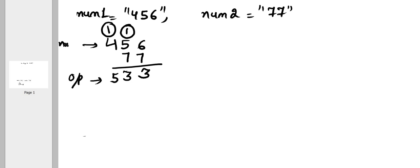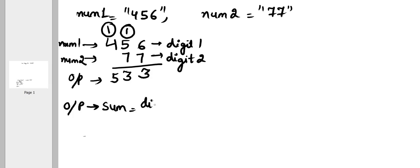So this is your num1 and this is your num2. So let's say this is your digit 1 and this is your digit 2. So basically what are we doing? We are doing sum as digit 1 plus digit 2, digit 1 plus digit 2 plus carry.